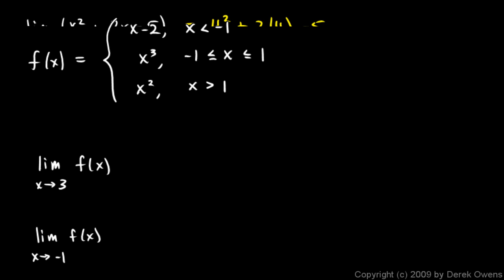These next examples involve evaluating a limit for a piecewise function. And for piecewise functions, the interesting behavior occurs where the definition of the function changes. That's where we can end up with a discontinuity, perhaps, not necessarily, but perhaps. And in other places, we typically have just some regular function, such as these here.